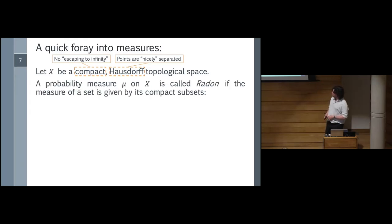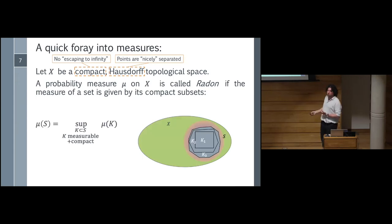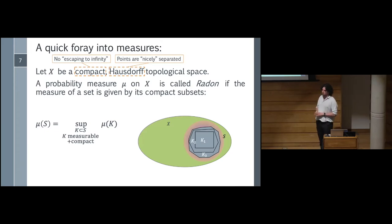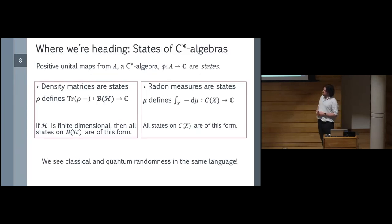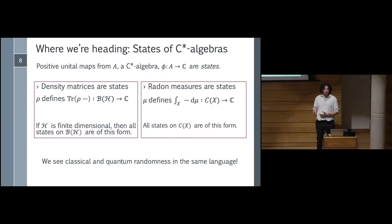We only care about Borel probability measures that are Radon, meaning they are built up by what they do on compact sets. Compactness is clearly very important — we never looked at full infinite sequences, only compact finite subsets of them. Whenever we talk about a Radon measure going forward, this is what we should have in mind: something that works in a compact space and only cares about the compact subsets. Where we're heading in our discussion of C*-algebras is towards states, because states on a C*-algebra will be the unifying thing telling us that we can talk about both density matrices and Radon measures in the same language and category.